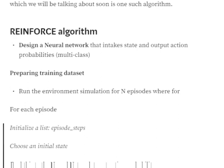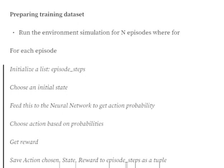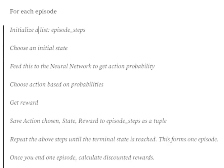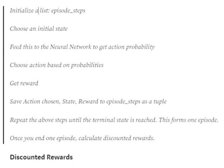We run the environment simulation for N number of episodes. For each episode, we initialize an empty list, then choose our initial state — this can be done using environment.reset in OpenAI Gym. We feed this initial state into the neural network, which outputs the action probabilities. Depending on those probabilities, we take an action, get a reward, and save the state, reward, and action in separate lists or as tuples.